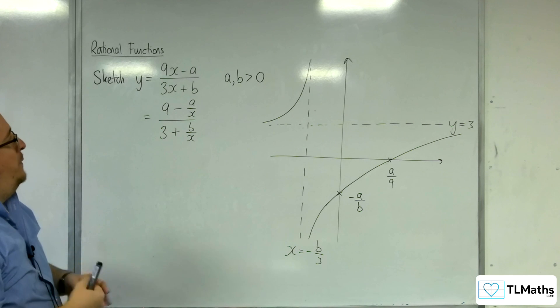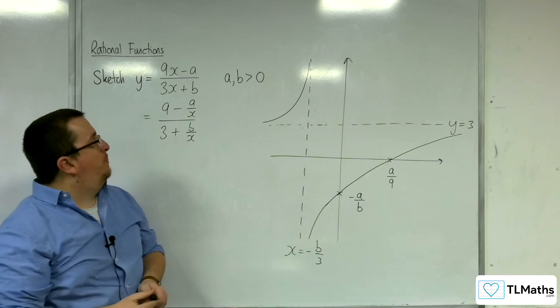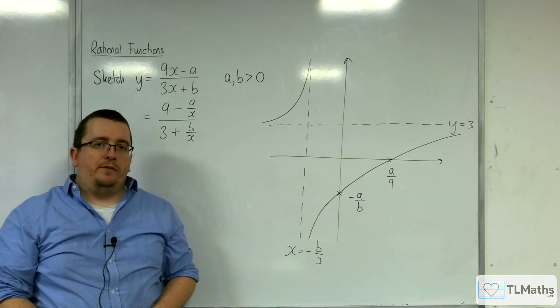And so that is how we can sketch y equals 9x take away a over 3x plus b, where a and b are positive.